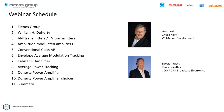Here's a list of the things we're going to talk about. We're going to introduce the Elenos Group, if you're not familiar. We're going to introduce a gentleman by the name of William H. Dougherty — you may know the last name, but you may not know his history. We'll go into a little bit more about that. We're going to talk about how AM transmitters and TV transmitters are similar and how they're different, and various types of amplitude modulated amplifiers, including conventional class AB, envelope average modulation tracking, the Kahn EER amplifier, average power tracking, and Dougherty power amplifiers and the various subsets of that. Then we'll have a summary.